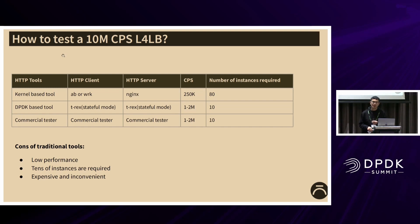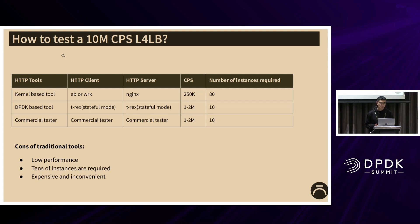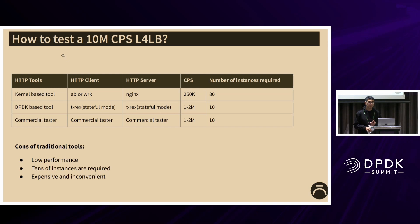How to test our 10 million CPS L4LBs — that's a big challenge. Usually we use HTTP clients and HTTP servers to set up the testing environment. We have three kinds of tools: first, coroutine-based tools like AB, WRK, and NGINX, with CPS of about 250k. Second, DPDK-based tools like DRX, with CPS of about 1 to 2 million. Third, commercial testers, also about 1 to 2 million CPS. Compared with L4LB, the performance of these tools is still very low, so we have to deploy tens of instances for a test, making testing expensive and inconvenient.